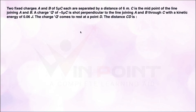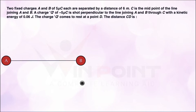Here we need to find the distance CD. First we can draw the diagram according to this question. There are two charges A and B — this is charge A and this is charge B. The distance between these two charges is 6 cm, as given in the question. The midpoint is C. Charge A is 5 micro coulombs and charge B is also 5 micro coulombs.